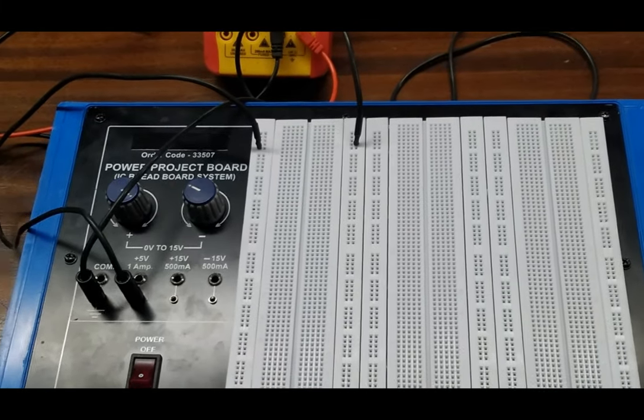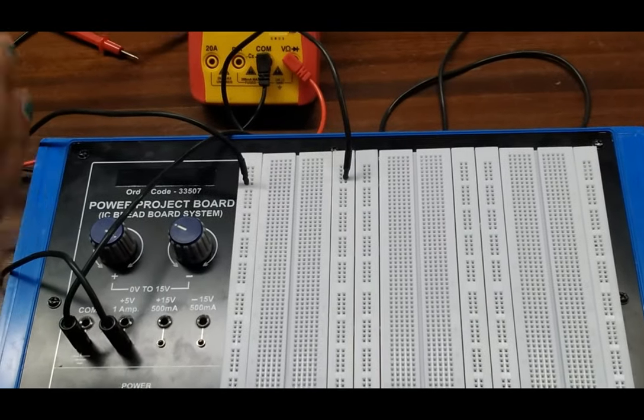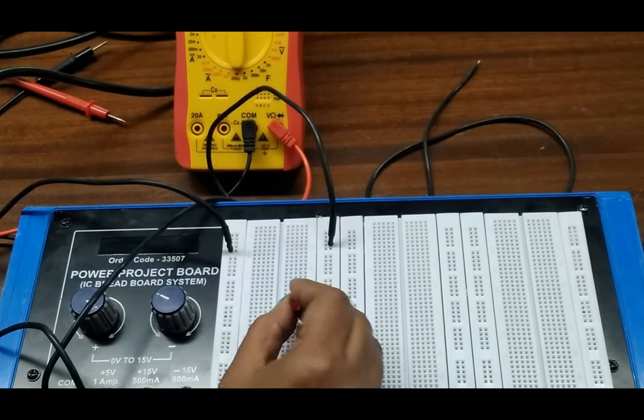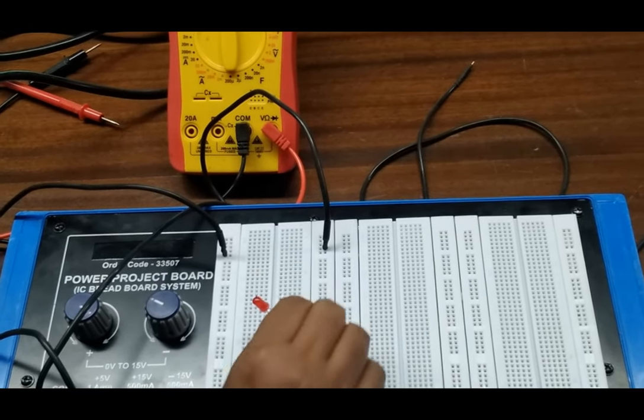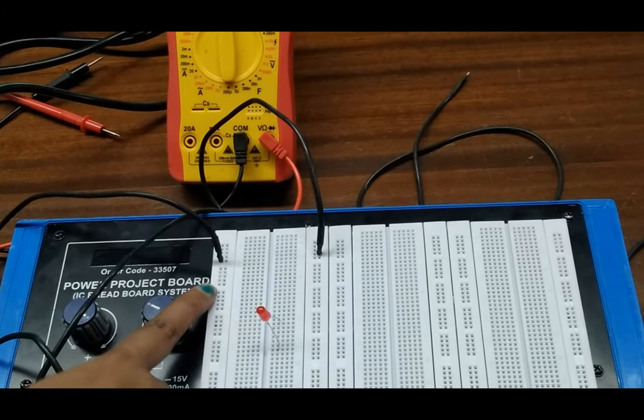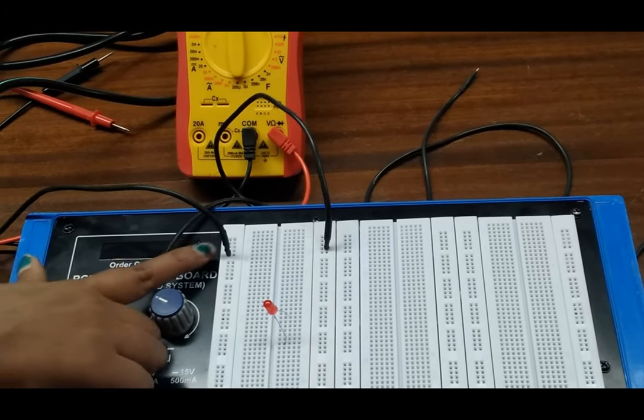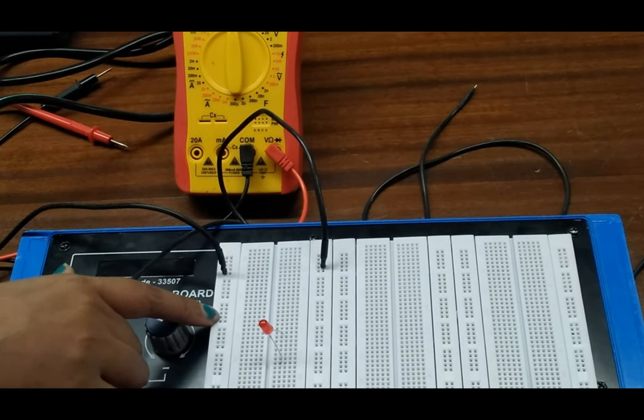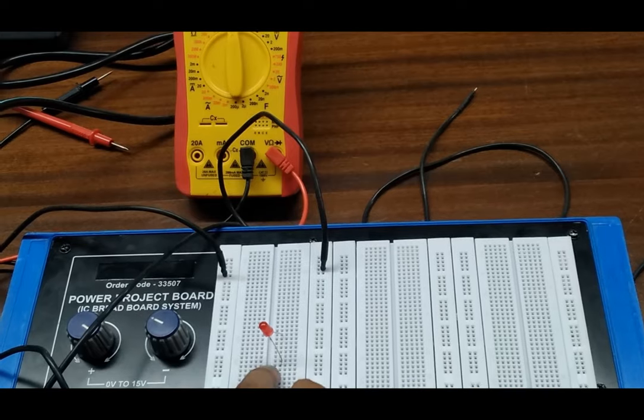On the breadboard, this is the positive and this is the negative of the LED, so connect it like this. In this strip, these terminals are internally connected in the horizontal line, and in this strip these terminals are internally connected on the vertical side.